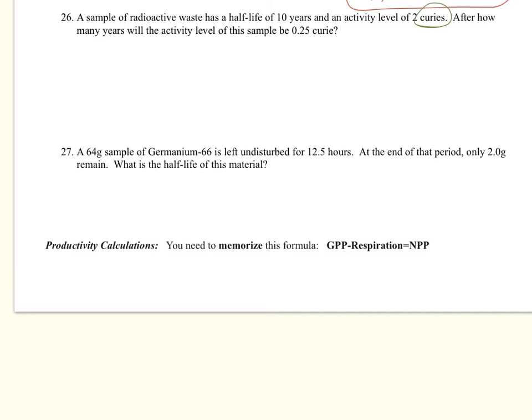Alright. So we start out with 2 curies. And it says in a half-life, it's going to be half. So half of 2 is 1, and that's 1 half-life. And so that's 10 years here. And then it's going to go again by half to 0.5 in another 10 years. And then half again to 0.25 in another 10 years. So 10 plus 10 plus 10 equals 30 years.